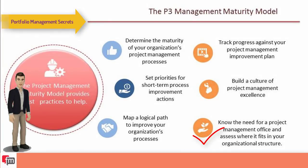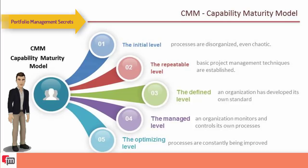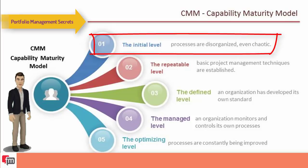The common model for maturity is the CMM — Capability Maturity Model — developed by the Software Engineering Institute in 1980, applicable to any field of business. The CMM was originally created after research suggested a relation between the quality of software applications and the quality of development processes. The five CMM levels are: initial, where processes are disorganized; and repeatable, where basic project management techniques are established and success can be repeated.